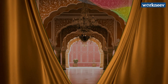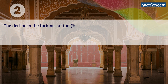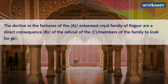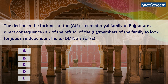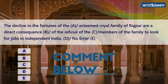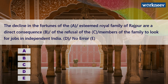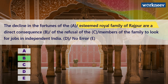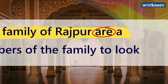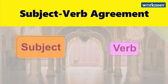Let's see the second problem: 'The decline in the fortunes of the esteemed royal family of Rajpur are a direct consequence of the refusal of the members of the family to look for jobs in independent India.' Pause the video and see if there is any mistake. The correct answer is option B — the error is in the part 'esteemed royal family of Rajpur are a direct consequence.' The error is in the verb 'are.'